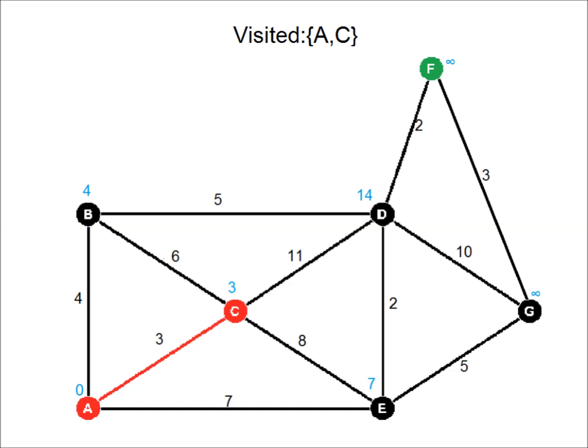Now we visit the next lowest distance vertex, which is B with distance four. From here we only recalculate distance to D, since C and A have already been visited. We calculate nine, which is lower than fourteen, so D's new distance is nine.